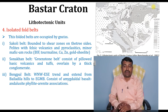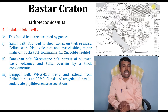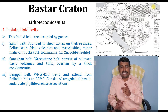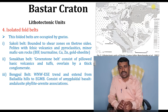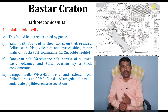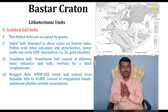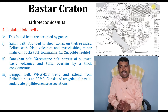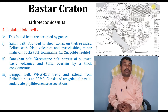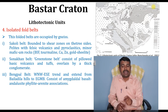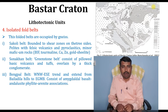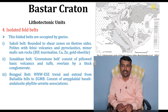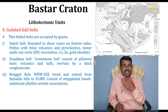The fourth lithotectonic unit is the isolated fold belts, consisting of niche rocks. There are three such belts: the Sakoli belt, the Sonakhan belt, and the Bengpal belt. The Sakoli belt is bounded by shear zones on three sides and consists of phyllites with felsic volcanics and pyroclastics, minor mafic-ultramafic rocks, and is important for banded iron formation, tourmaline, copper, zinc, and gold deposits.